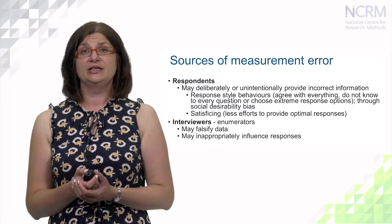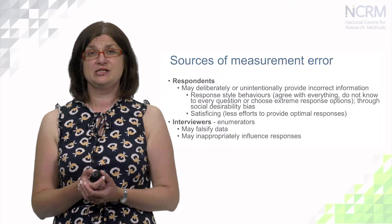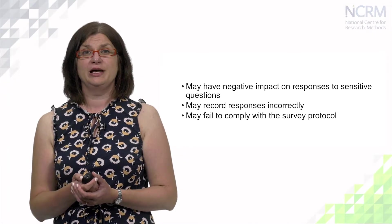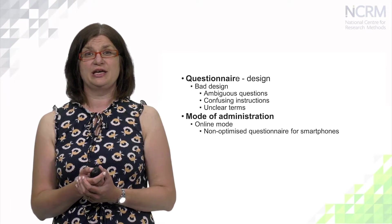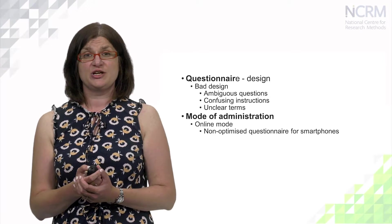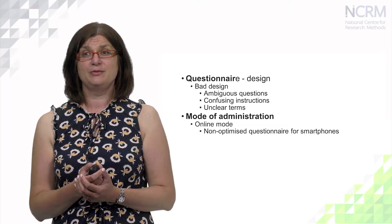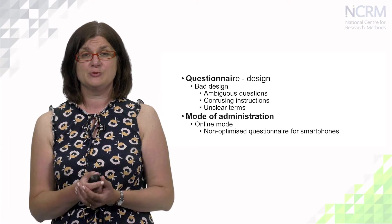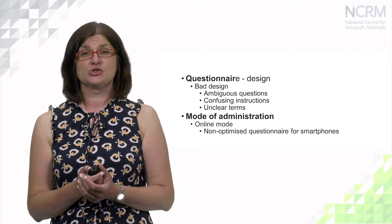Interviewers can also negatively impact data quality through measurement error. They may falsify data, inappropriately influence responses, have a negative impact on responses to sensitive questions, record responses incorrectly, or fail to comply with the survey protocol. Bad questionnaire design – such as ambiguous questions or confusing instructions – has a very negative impact on data quality. Mode of administration is also important; many social surveys are moving towards mixed mode or online-first designs, and until recently many questionnaires were not optimized for smartphones, which was a big source of measurement error.